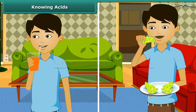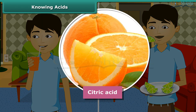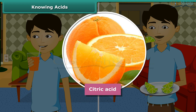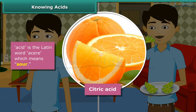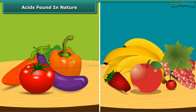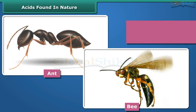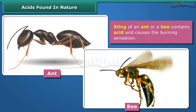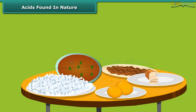Many of us like the sour taste of food. You must have noticed that sometimes juices we sip are sour in taste. Generally, sour tasting substances contain acids. Some fruits contain citric acid which is sour in taste. The origin of the word acid is the Latin word 'acer' which means sour. Acid is found in natural substances like fruits and vegetables. Have you heard that the sting of an ant or a bee contains acid and causes a burning sensation?